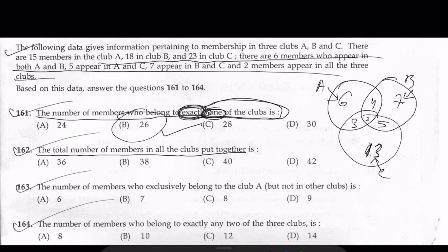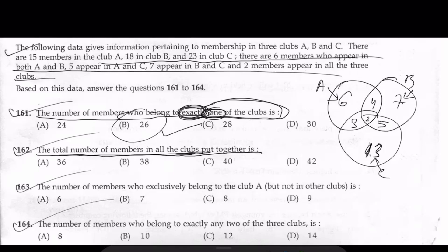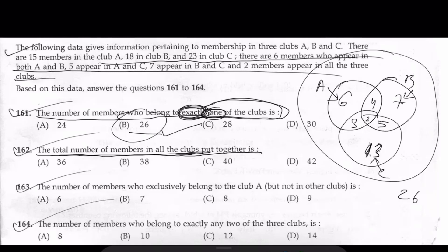Question 162: the total number of members in all the clubs put together. You add up all the regions. We already have 26 from exactly-one members. Adding the two-club intersections: four, three, and five gives 12. Plus the center two. So 26 plus 12 plus 2 equals 40. The answer is 40.